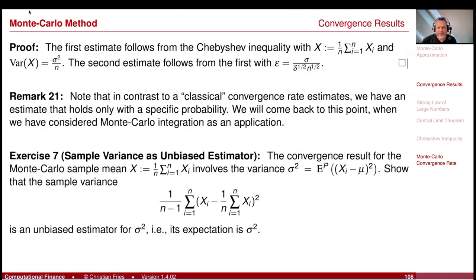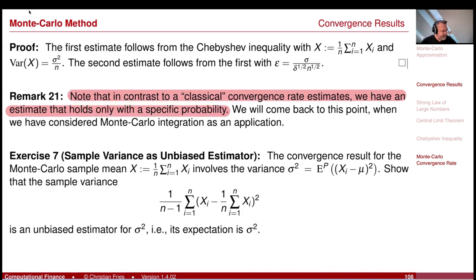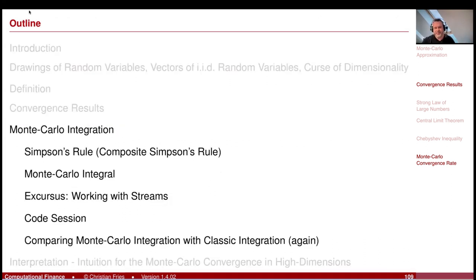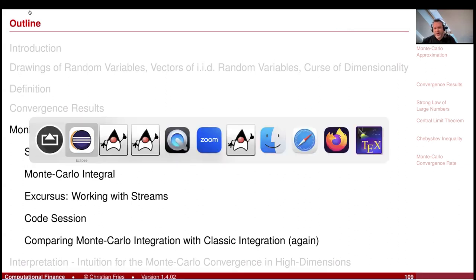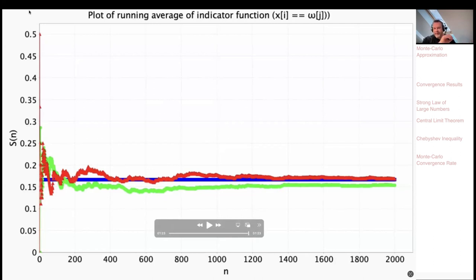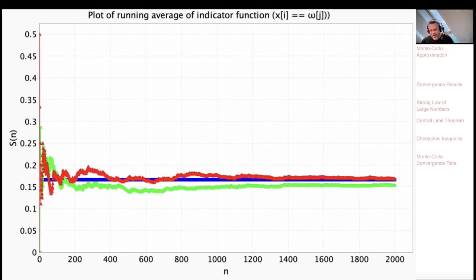The proof was done by hand. Note that in contrast to a classical convergence estimate, we have the defect that our convergence rate holds only with a specific probability. That was it for the convergence results: we know convergence and the convergence rate is 1 divided by square root of N. If you draw multiple sample-path lines, you would see that these lines approach mu with a corridor that narrows as 1 divided by square root of N, but there is still deviation with a certain probability.